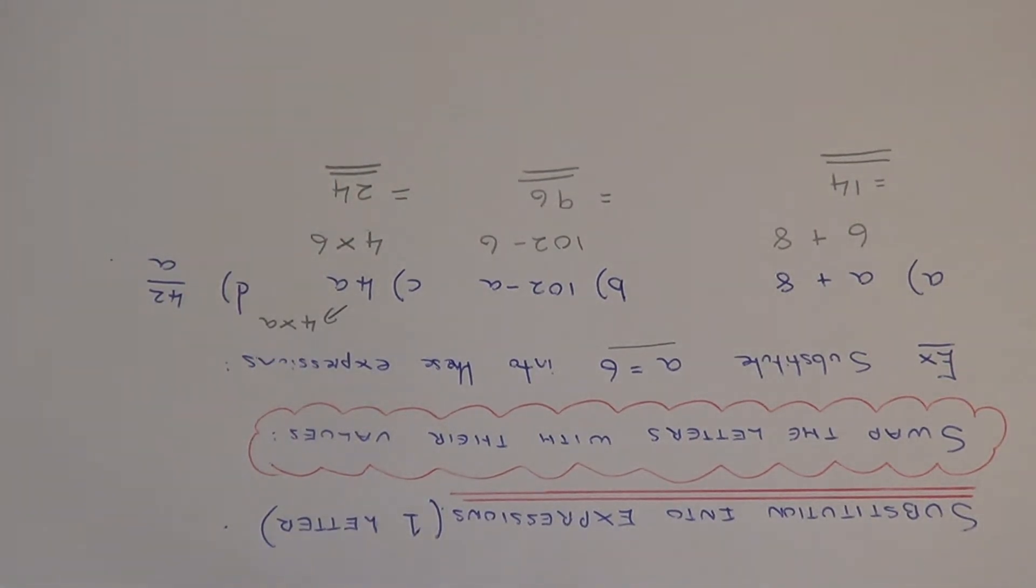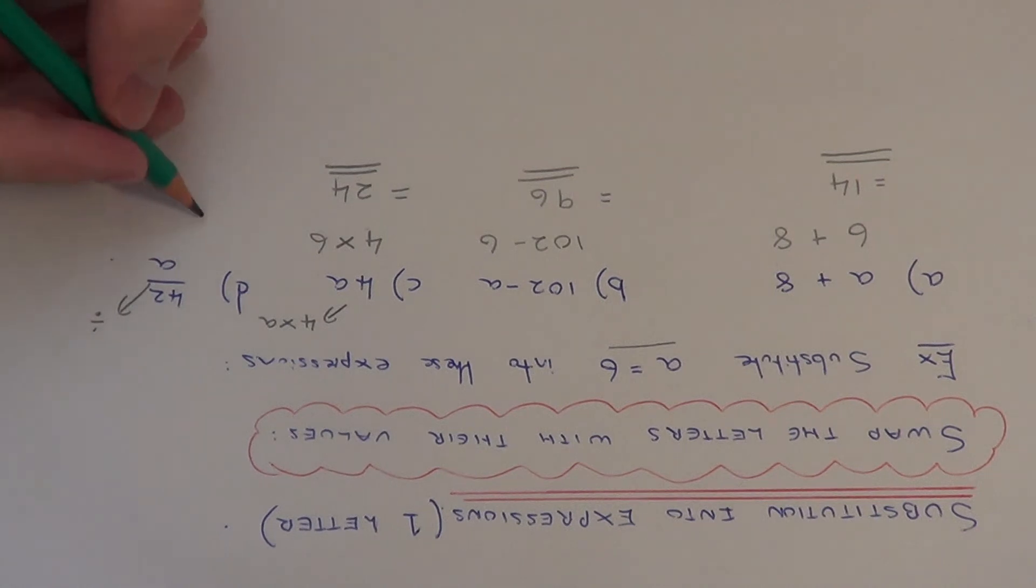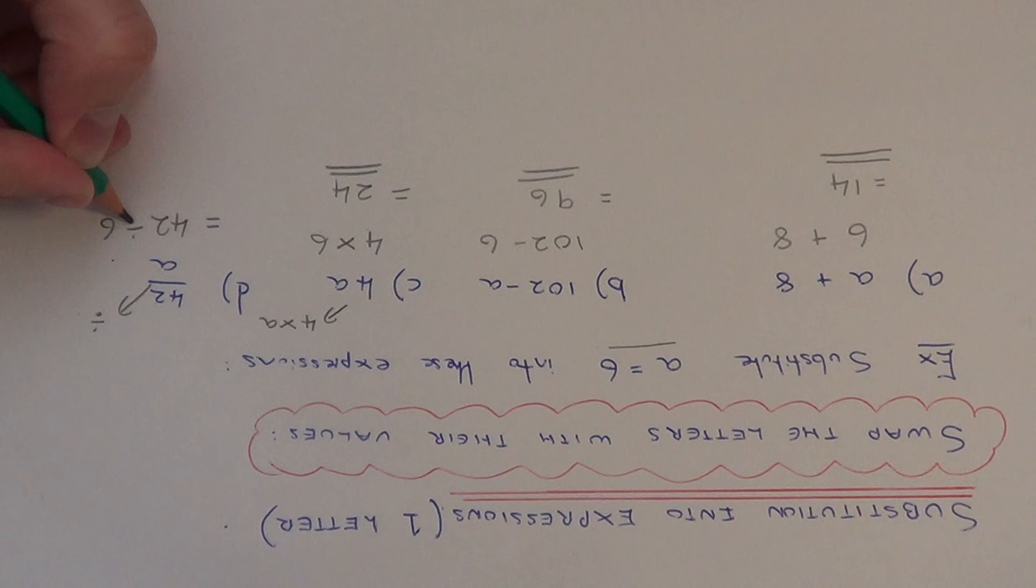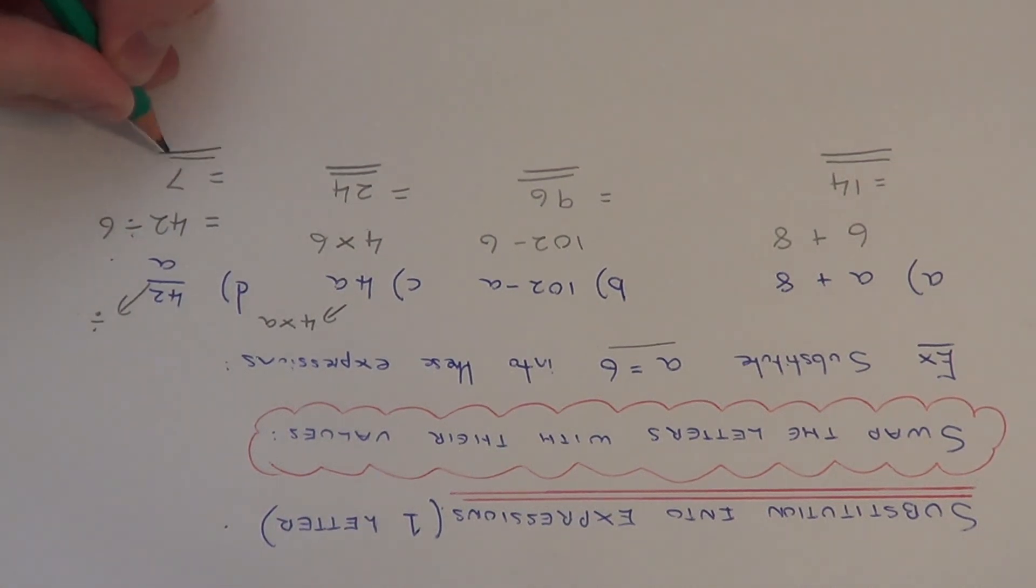For the final example, this time we have 42 over a. This line here means we're dividing, so we've got 42 divided by a. Make sure you do it in that order, so it's 42 divided by 6, and 42 divided by 6 is 7.